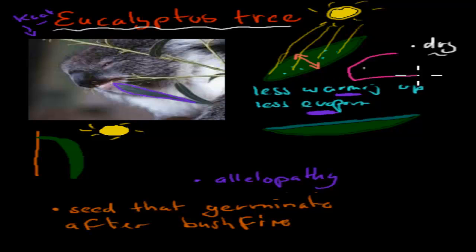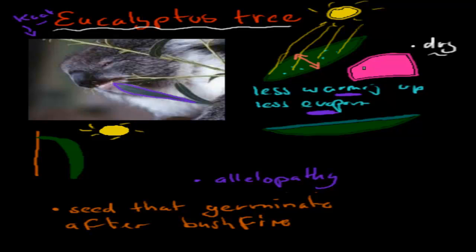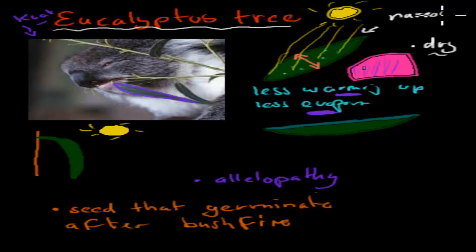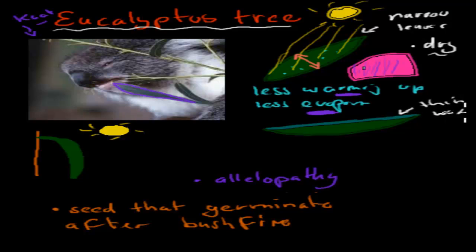If they had broad leaves, like some European plants do, there would be more evaporation and more warming up, which would be bad in a really hot and dry environment. The narrow leaves are the first adaptation. The eucalyptus also has something called a thin, waxy cuticle.